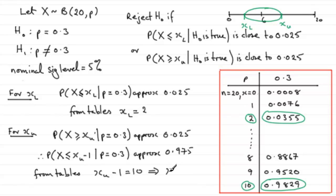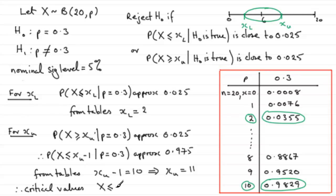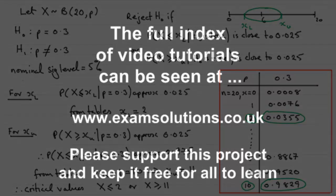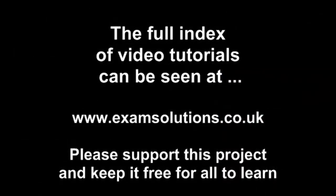So the critical region in answer to this question is: X less than or equal to 2, or X greater than or equal to 11. These are the cutoff points for the two-tailed test.